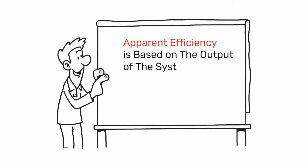In other words, apparent efficiency is based on the output of the system, while true efficiency takes into account the input as well.